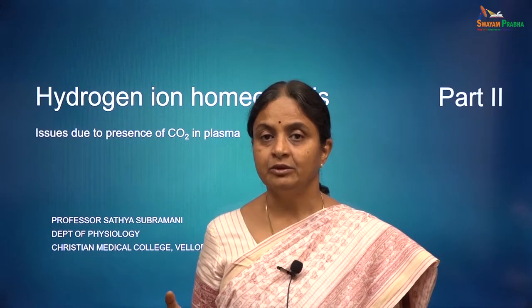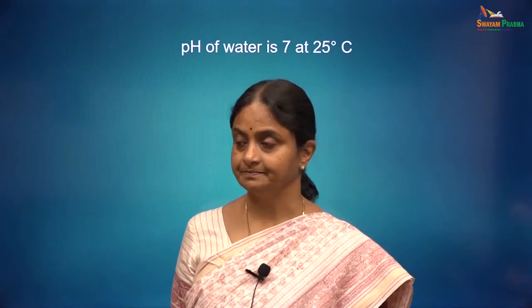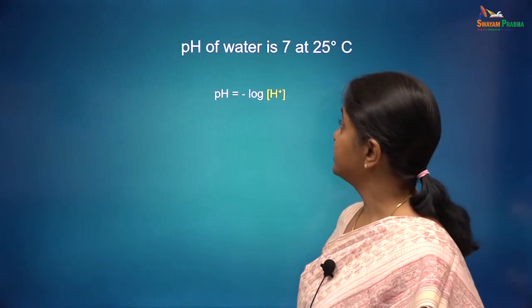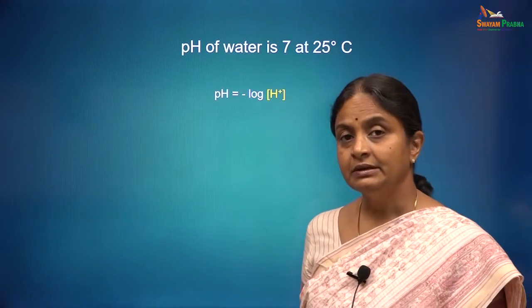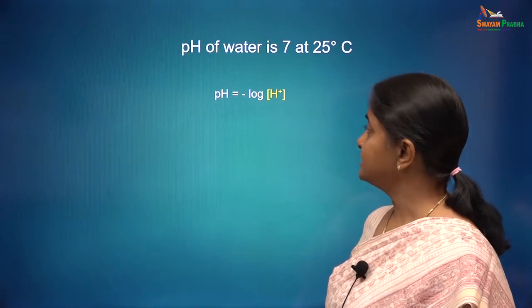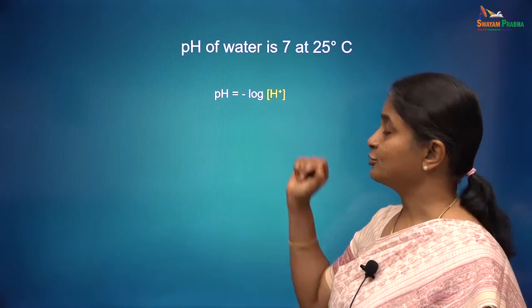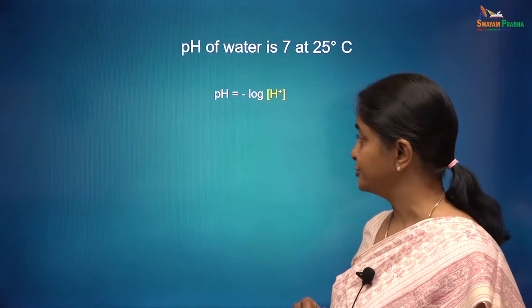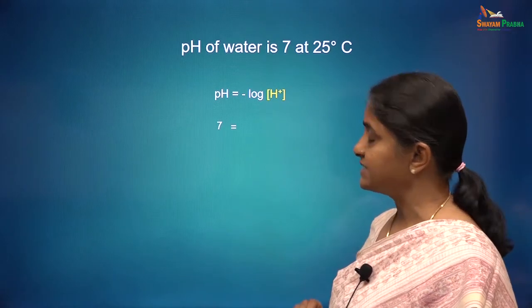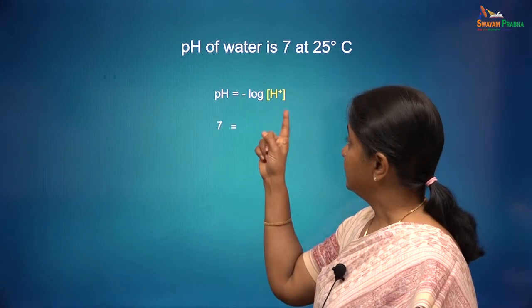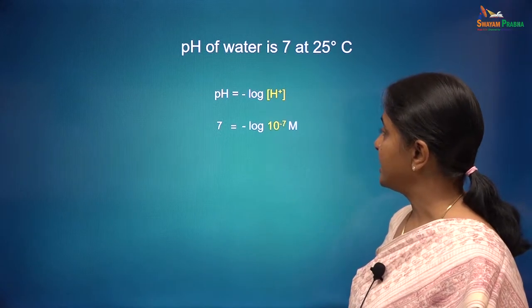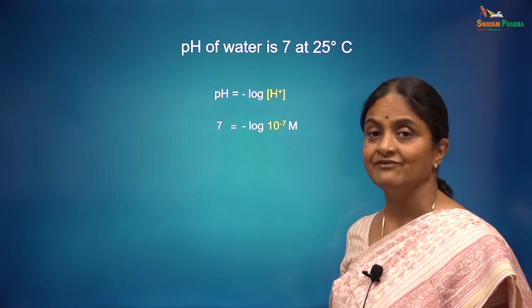To understand pH, we will look at some basic chemical concepts and the water equilibrium. Water has a pH of 7, pH being the negative logarithm of the proton concentration in a solution. To get a pH of 7 for water, the free hydrogen ion concentration has to be 10 to the minus 7 molar.